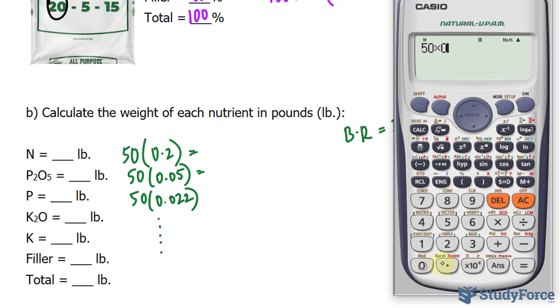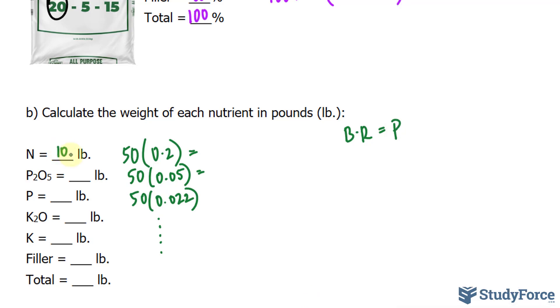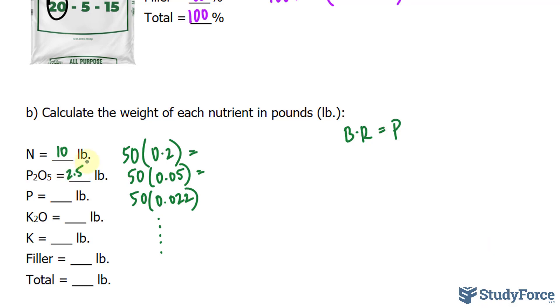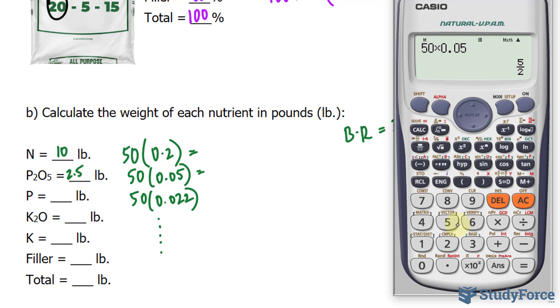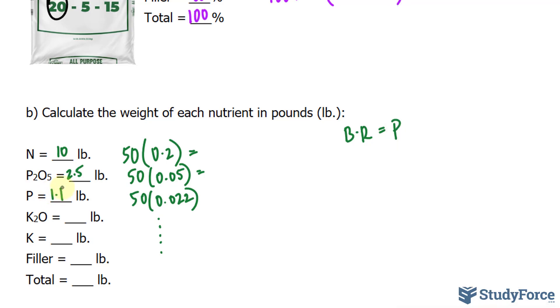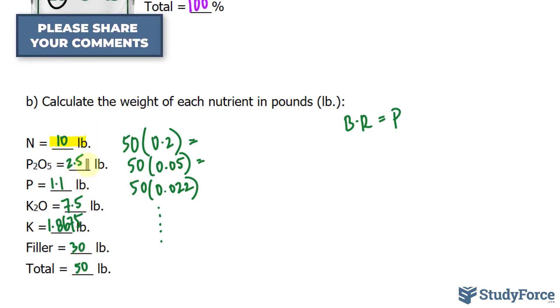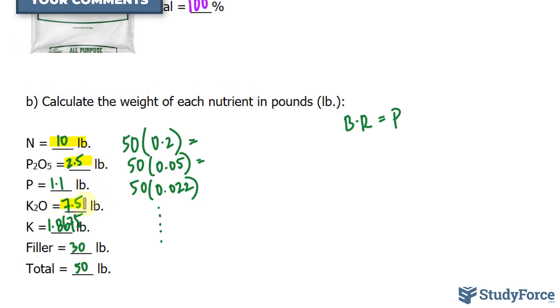50 times 0.2 makes 10 pounds of elemental nitrogen. 50 times 0.05, that is 2.5 pounds of P2O5. The weight of phosphorus only is 50 times 0.022. And that is 1.1. If you do the rest correctly, you should end up with the following values. And finally, the total should add up to 50 pounds and it does. Take 10 plus 2.5 plus 7.5 plus 30. That amounts to 50 pounds.